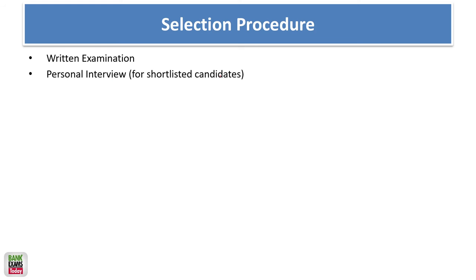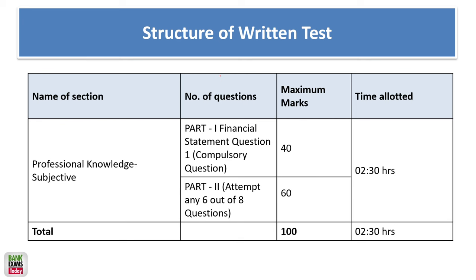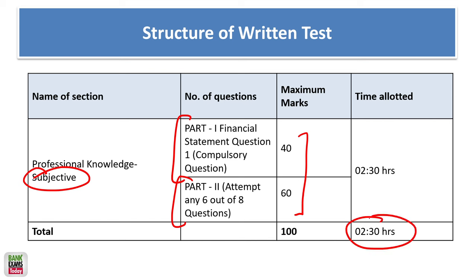The selection procedure is a written exam followed by personal interviews. The exam pattern has been totally changed — it is a subjective paper now on professional knowledge. Part one covers financial statements, and we will also discuss the syllabus for part two. There is no sectional cutoff; total marks are 100 and two hours and 30 minutes are allotted.